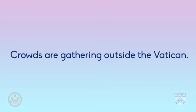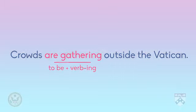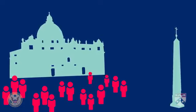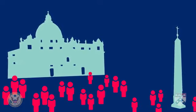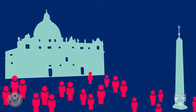Here's another example: 'Crowds are gathering outside the Vatican.' We have the subject, 'crowds,' the verb 'to be,' 'are,' and the main verb 'gather' with '-ing.' By using present progressive, the broadcaster shows that the event is happening now, and the viewer feels like they are part of the story.